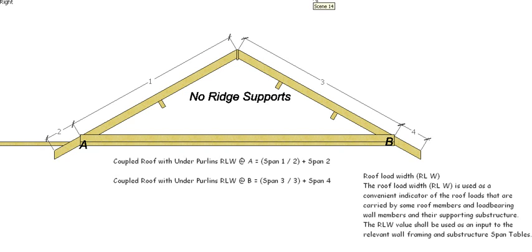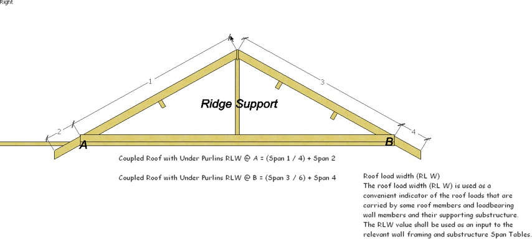Now if we were to throw a ridge support into that scenario, we now have span 1 divided by 4. Okay, because this is going to carry halfway down there, then that's going to get carried by the purlin, and then the other end would be carried by the rest of the way. So span 1 divided by 4 plus span 2. On this side we have two purlins, so it's going to be span 3 divided by 6 plus span 4 will give us the RLW of B in this situation.